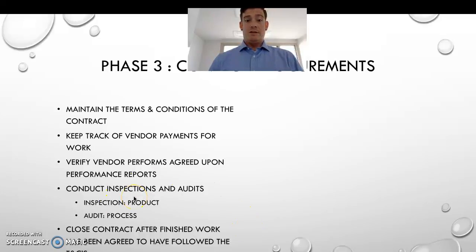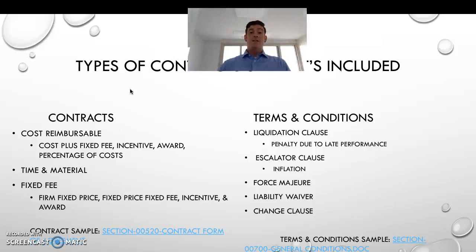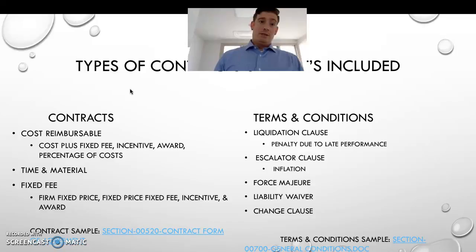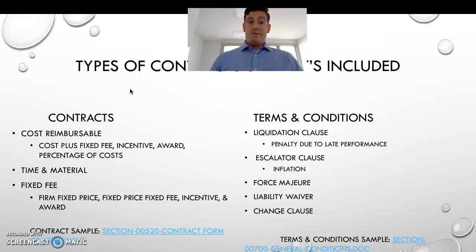There are many different types of contracts - the main one most people go with is fixed fee. Out of all contracts there are three overall types: cost reimbursable, time and material, and fixed fee. Time and material is the best of both worlds - a little bit of fixed fee and cost reimbursable. Types of cost reimbursables include cost plus fixed fee, with incentives and awards, and percentage of costs. Fixed fees include firm fixed price and fixed price with incentives and awards.